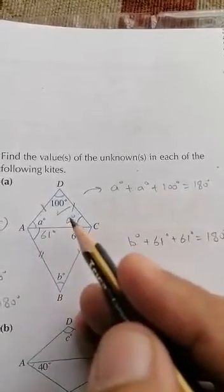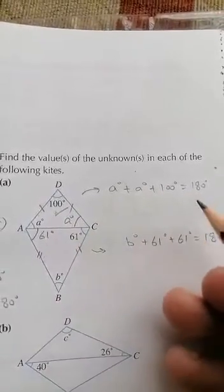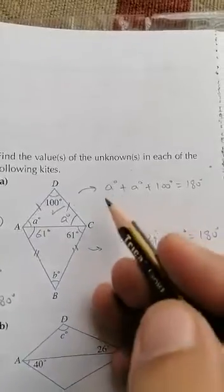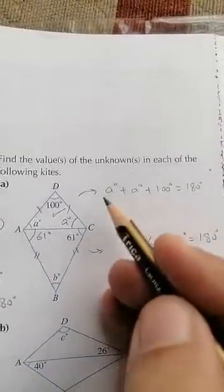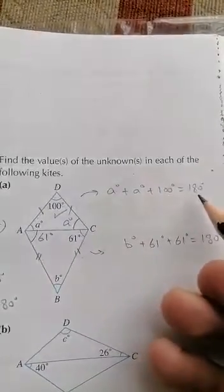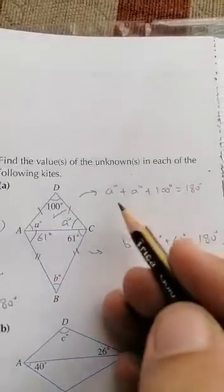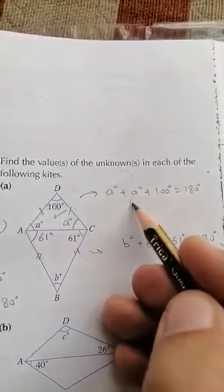According to the angle property, the sum of three interior angles of a triangle is equal to 180 degrees. So I have constructed an equation here: a + a + 100° = 180°. We can easily solve this equation to get the value of a.